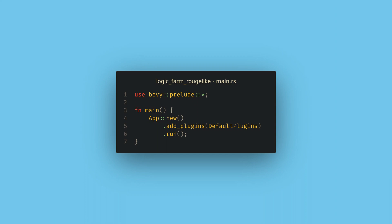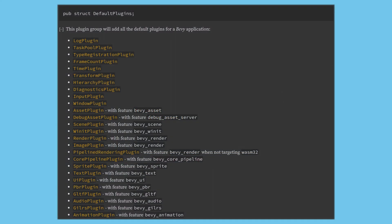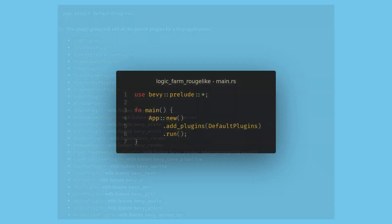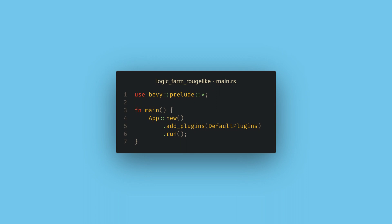To get us started, let's call `add_plugins` and use the `DefaultPlugins`. Default plugins gives us all of the core things you'd expect from a game engine: a window, input, asset loading, and much more. After adding the plugins, we call `run`. Now if we run the app, we'll see a nice black screen which we can close and the program will exit.